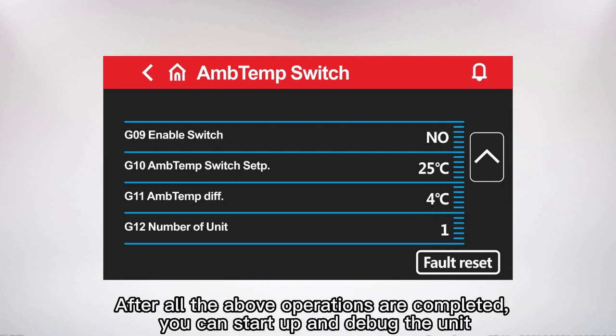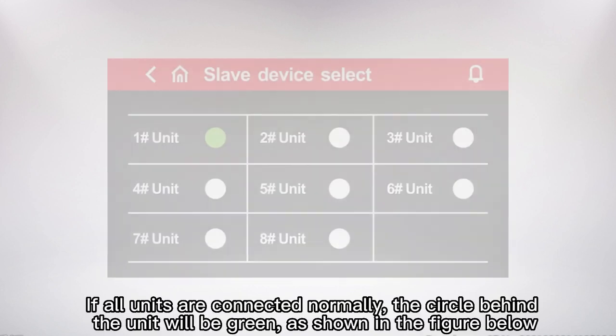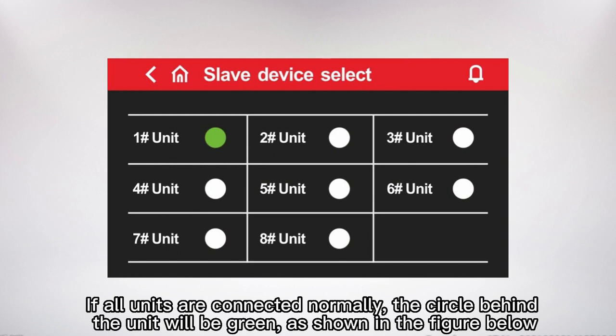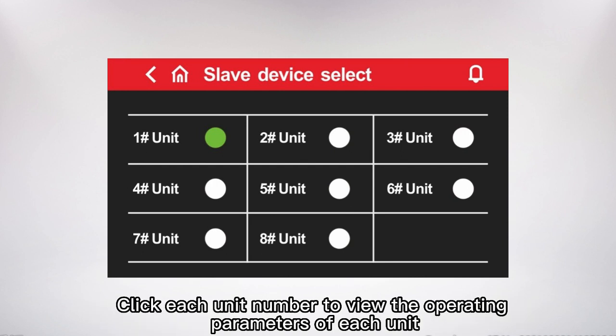After all the above operations are completed, you can start up and debug the unit. If all units are connected normally, the circle behind each unit will be green. Click each unit number to view the operating parameters of that unit.